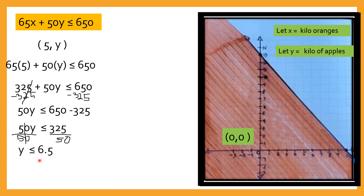Ano ibig sabihin yan? Pag ang bibilhin mo — nakafix ka na gusto mong bumili ng limang kilo ng oranges — ang pinakamataas na kilos na pwede mong bilhin para ma-maximize mo yung pera mo na 650 ay 6.5 kilos, 6 at kalahating kilo. Hanggang doon lang ang kaya mong bilhin na kilo of apples pag limang kilo ang oranges na gusto mong bilhin.